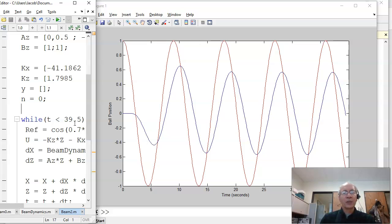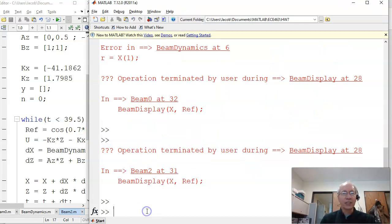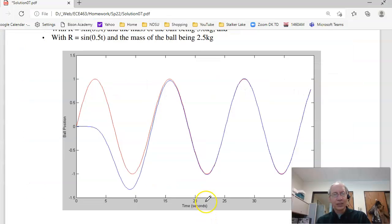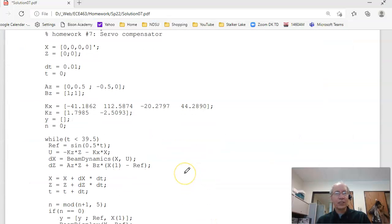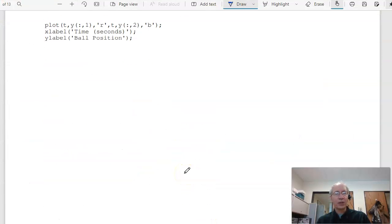Foreshadowing for the next midterm. Suppose I want to track a constant and track a sine wave. But that'll be a different assignment. So that's homework set number 8 for ECE 463, modern control.